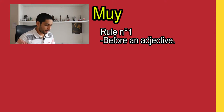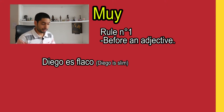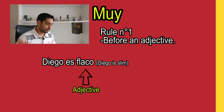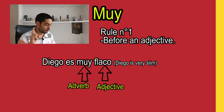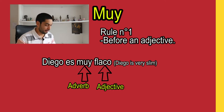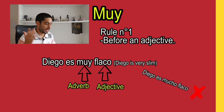Let's take a closer look. We can say, for example, Diego es flaco — flaco, which means slim, is the adjective. So if we want to say he is very slim, we say Diego es muy flaco. Please, never ever in your life say Diego es mucho flaco.